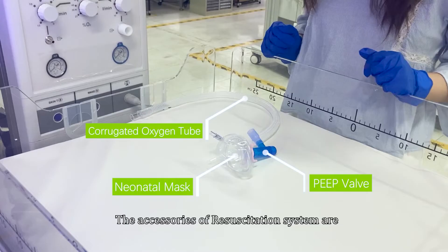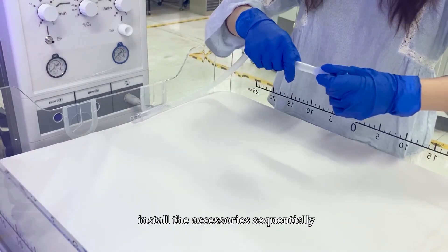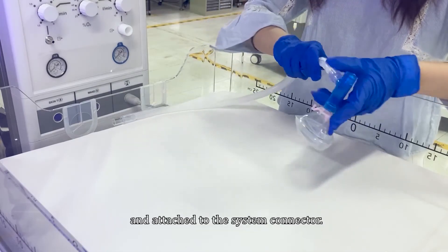The accessories of resuscitation system are corrugated oxygen tube, PEEP valve, and neonatal mask. Before performing a resuscitation operation, install the accessories sequentially and attach to the system connector.